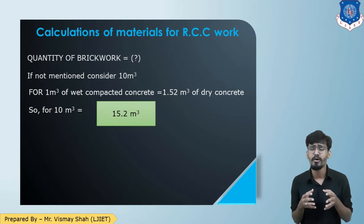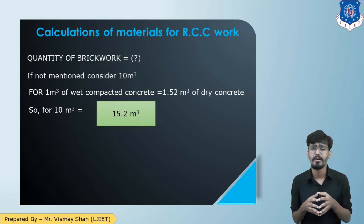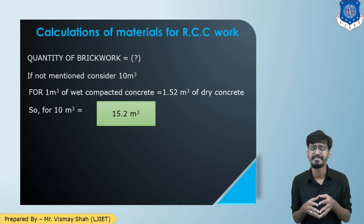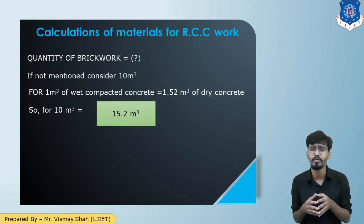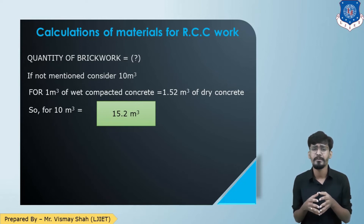Starting with the material quantity calculation: the quantity of concrete is not provided in this sum, so we will consider 10 cubic meter. Using the thumb rule, for 1 cubic meter of wet compacted concrete, dry concrete is 52% extra, giving 1.52 cubic meter. For our quantity of 10 cubic meter, we need 15.2 cubic meter of dry concrete.